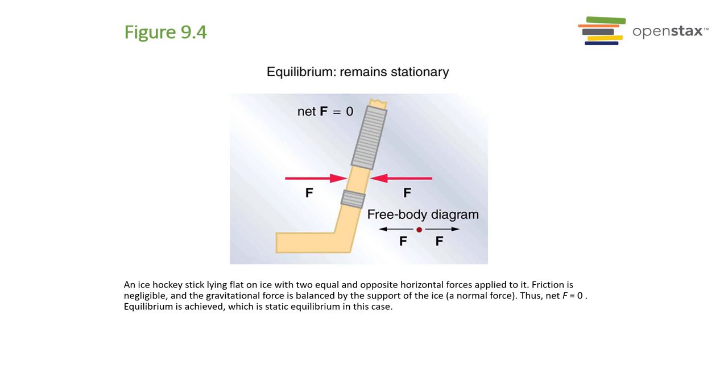We have a hockey stick with two forces acting in opposite directions at the same location on the stick, the end. The result is a net force of zero, which means there is no net force acting on the stick.